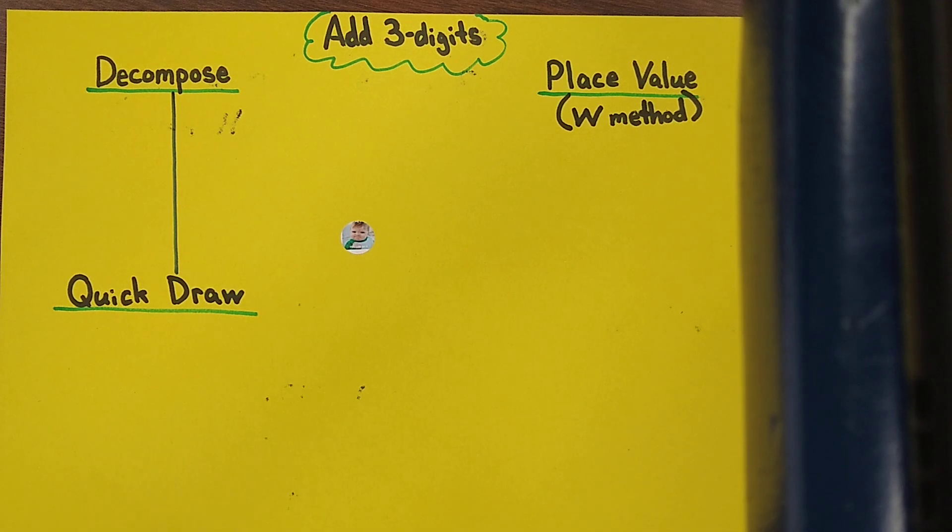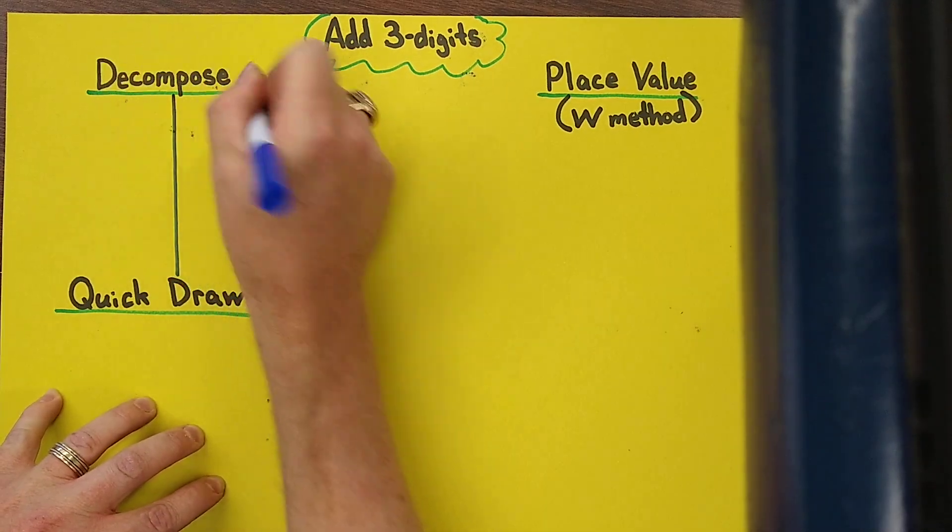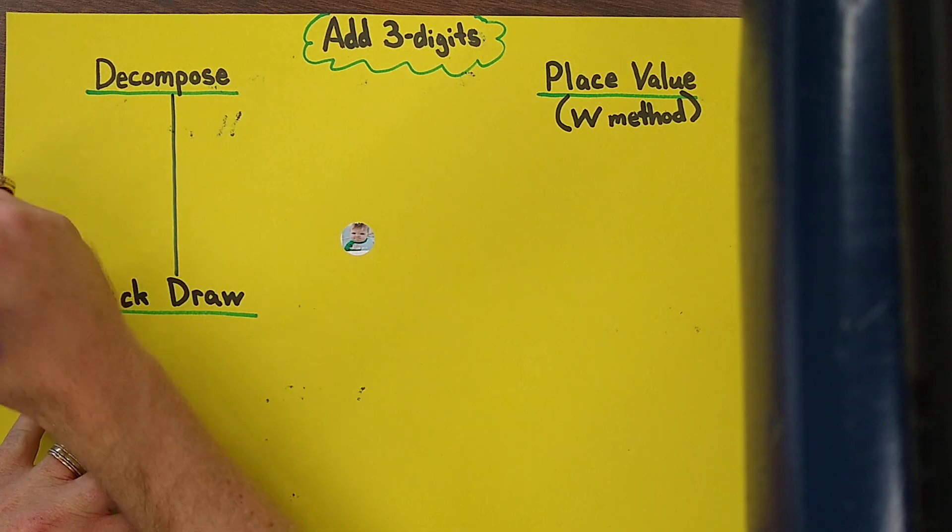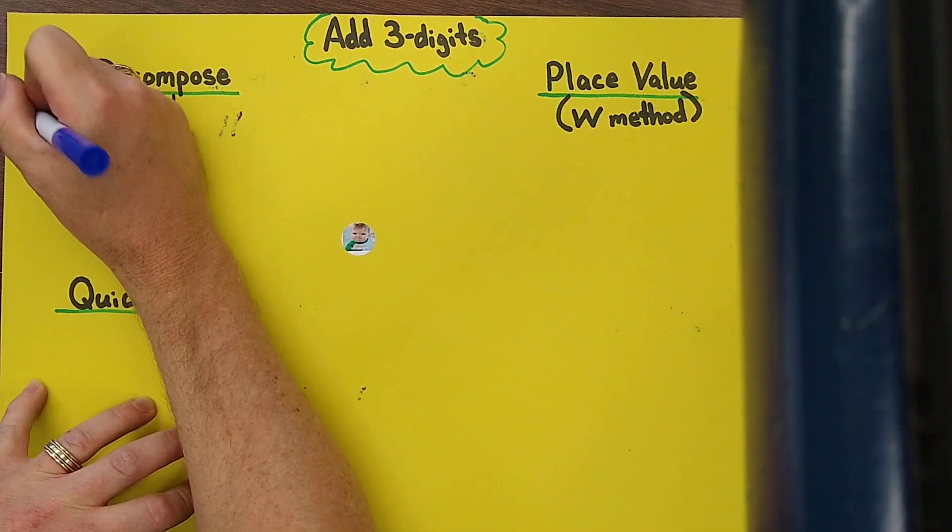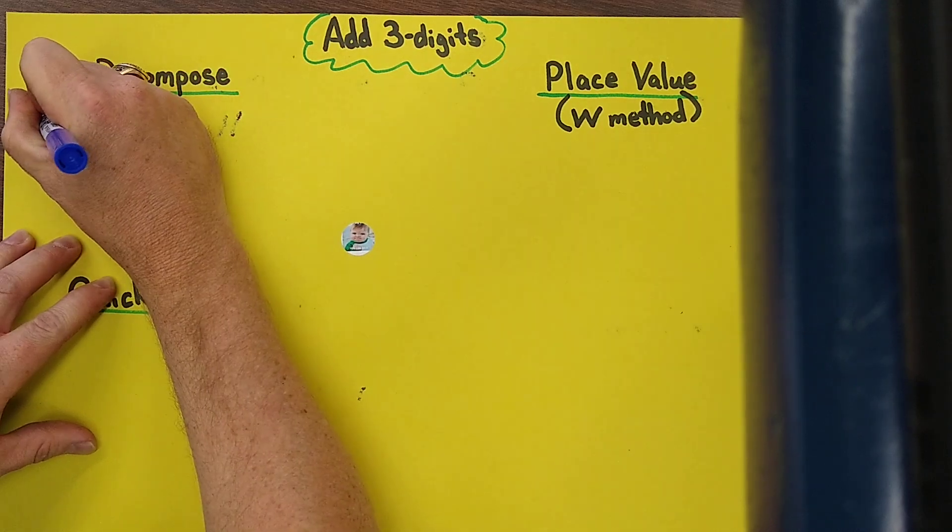Hey guys, today we're going to focus on adding two three-digit numbers and then we'll talk real quick about how to subtract two three-digit numbers as well. We'll start out by doing a decomposing strategy and we're gonna first do one where we don't have to regroup and then we'll do one where we have to regroup.